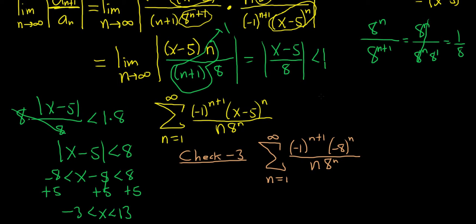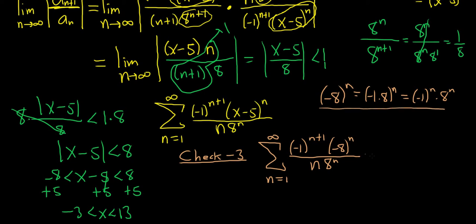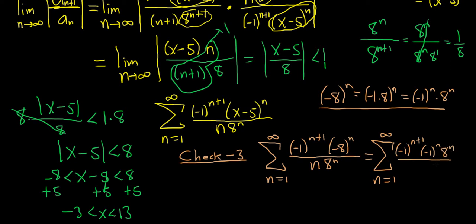We have negative 8 to the n. We can write this as negative 1 times 8, all to the n, which by properties of exponents equals negative 1 to the n times 8 to the n. This is a really key strategy. So we now have negative 1 to the n+1 times negative 1 to the n, over n times 8 to the n — and notice the 8 to the n's cancel.